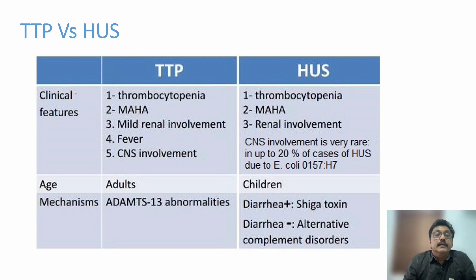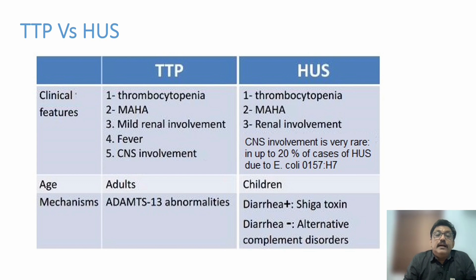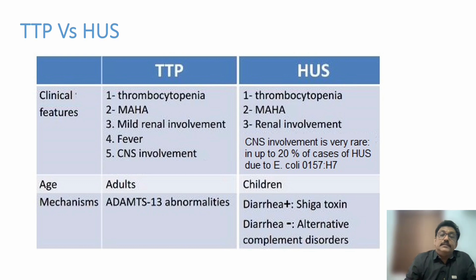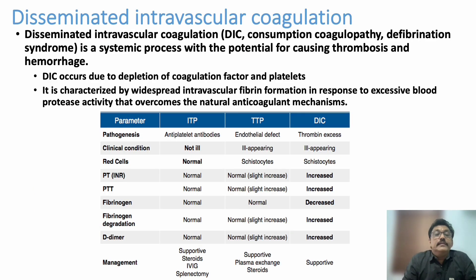The major difference between TTP and HUS: both have thrombocytopenia and microangiopathic hemolytic anemia, but renal involvement is mild in TTP and severe in HUS. CNS involvement is very mild or absent in HUS but very common in TTP. Fever can occur in both. TTP is common in adults; HUS is common in children. ADAMTS13 abnormality is the major cause for TTP.